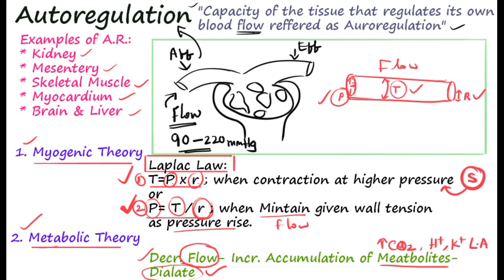In summary, there are two theories: the myogenic theory operating with the second form of Laplace law, and the metabolic theory. Autoregulation in both kidneys and generalized blood vessels may also involve nitric oxide as well as angiotensin 2. These are chemicals that may be involved in the autoregulatory process. This is all about autoregulation.